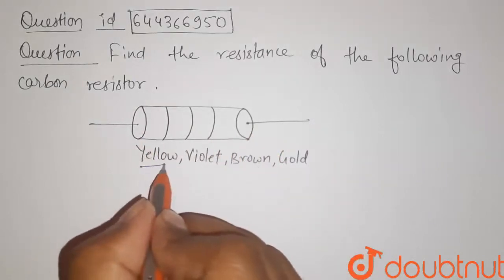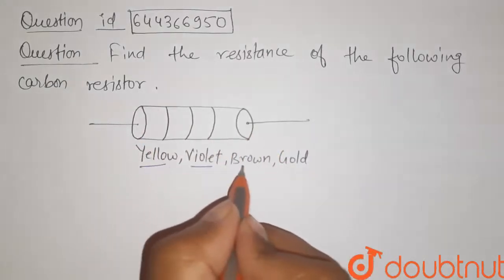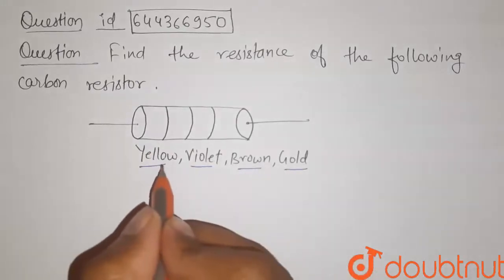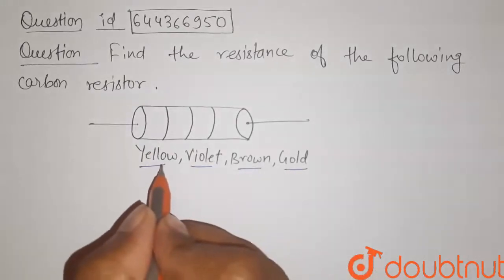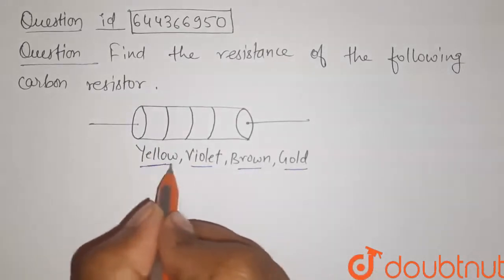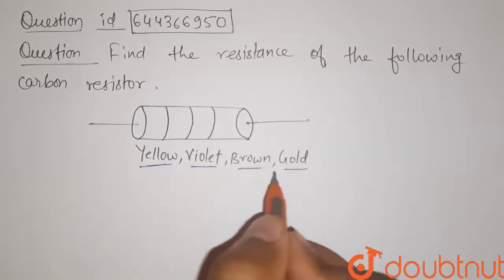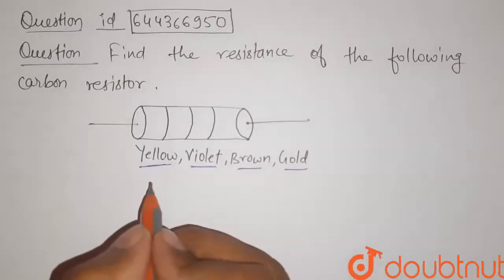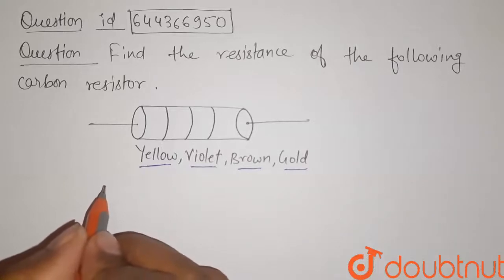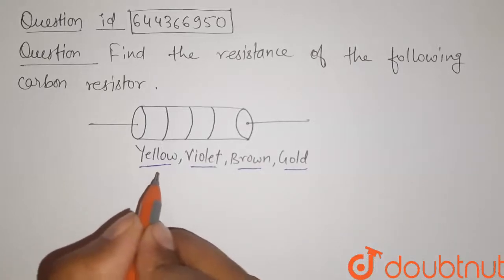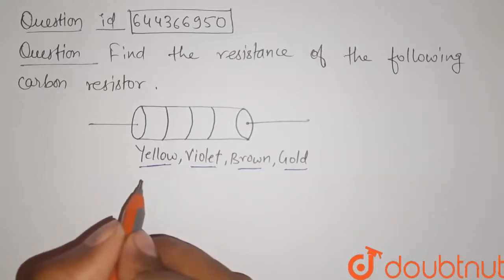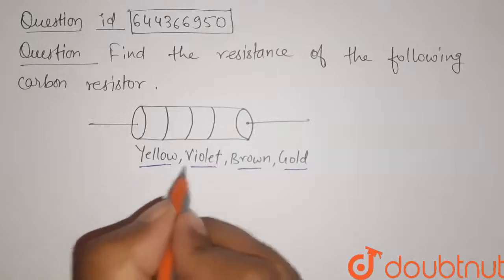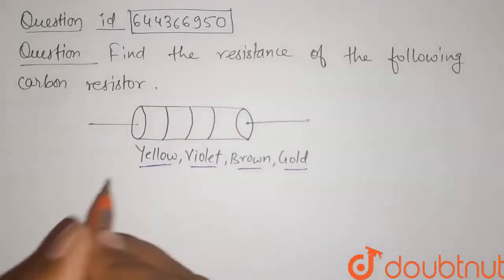The resistance of a carbon resistor is encoded with colors. That means we have to write the resistance by using these colors. In the NCERT textbook, we are given a table for the color code of carbon resistors, so here I am drawing that table for these four colors.